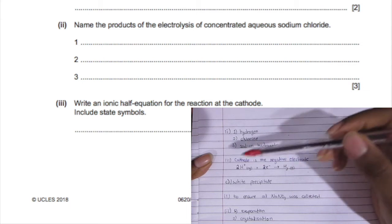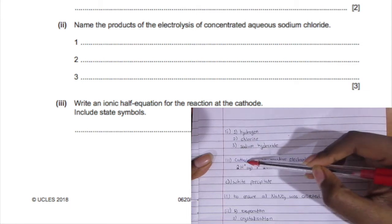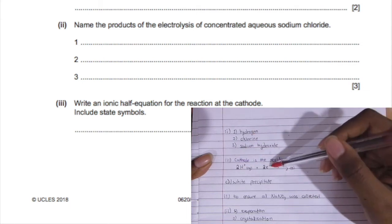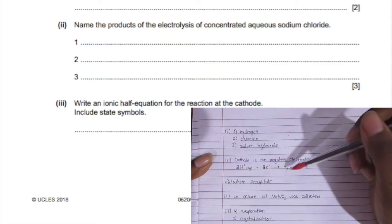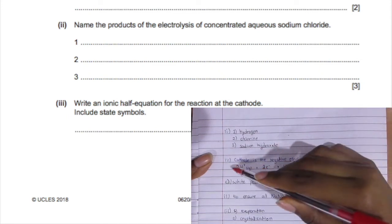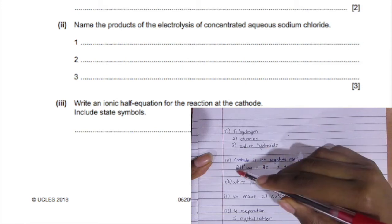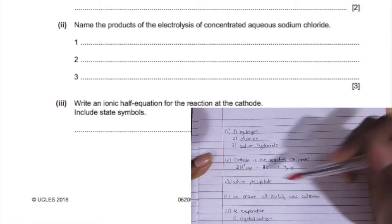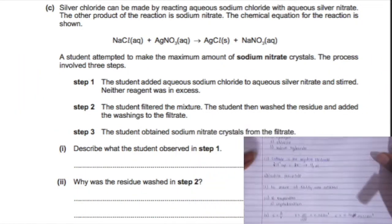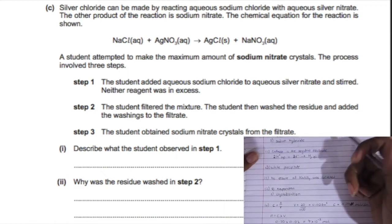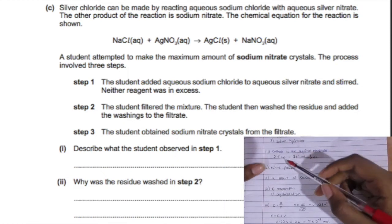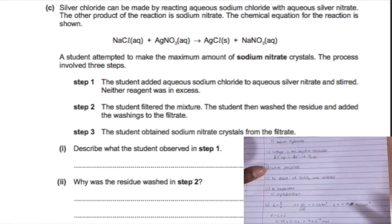Write an ionic equation of the reaction at the cathode. The cathode is the negative electrode, so the cation is going to go there. Hydrogen is produced, so then the hydrogen ion plus two electrons gains those electrons to form the hydrogen gas. Make sure to balance this equation.